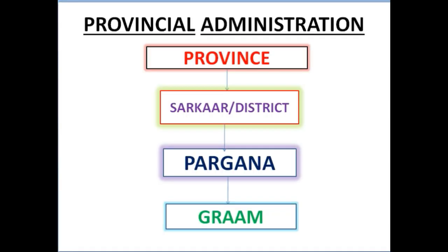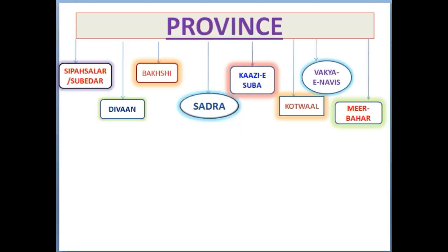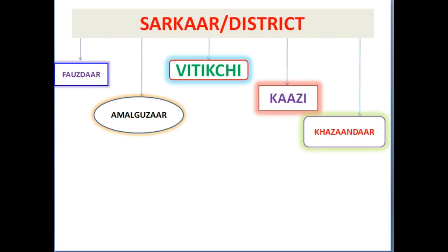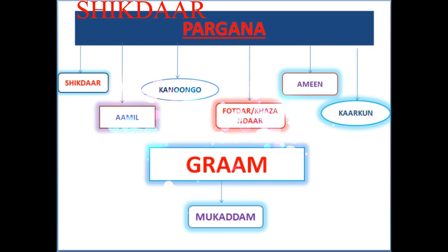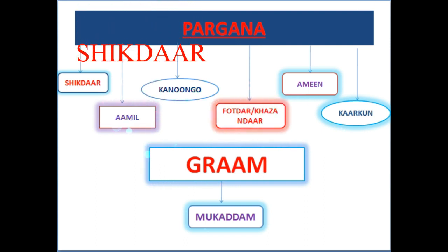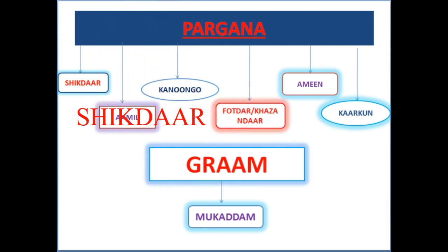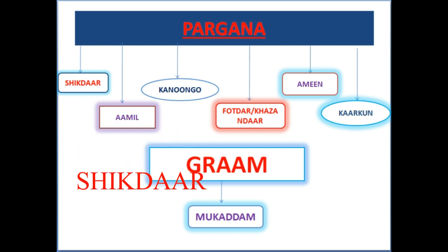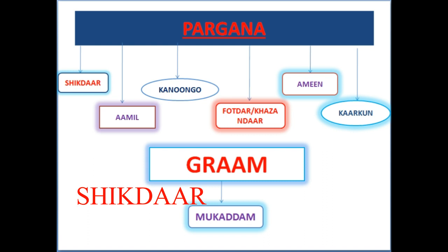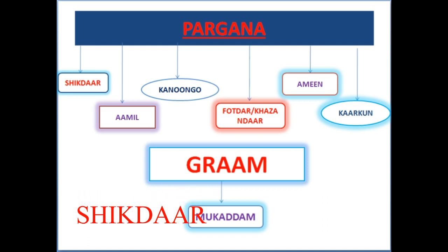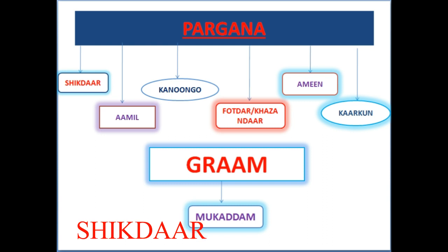The main officer of the Pargana was the Shigdar. He was under the Fosdar and was liable to maintain law and order in the Pargana. He also assisted the Amil in collecting revenues and performed judicial duties in the Pargana.